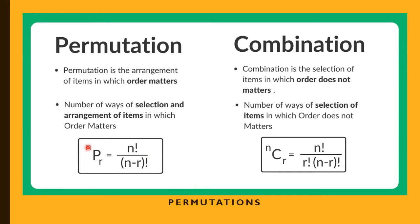So, there are n objects and we want to select and arrange r objects. Therefore nPr equals n factorial by (n minus r) factorial. nCr, that is combination, equals n factorial by r factorial into (n minus r) factorial. nCr means there are n objects — select r objects only, no need to arrange. So, the permutation answer is always greater than the combination answer.